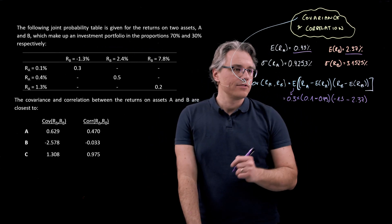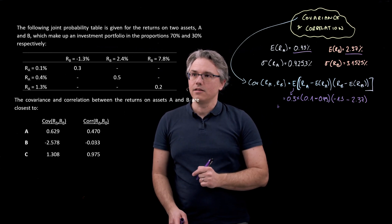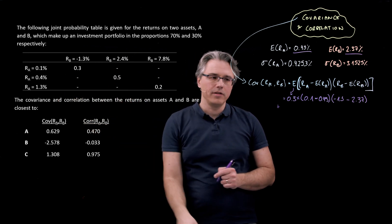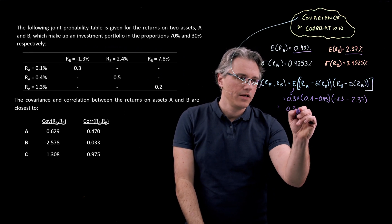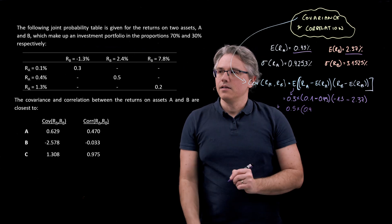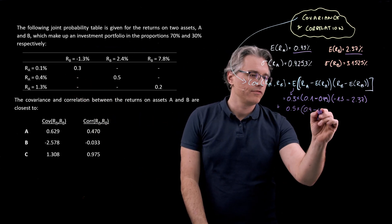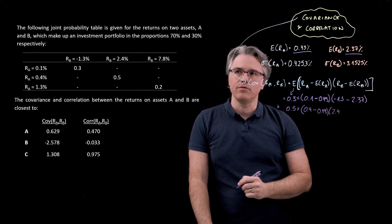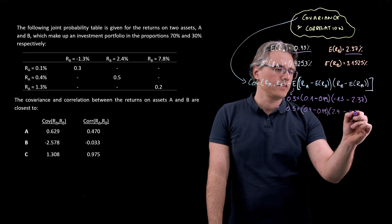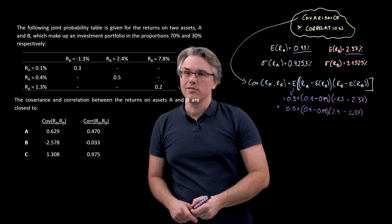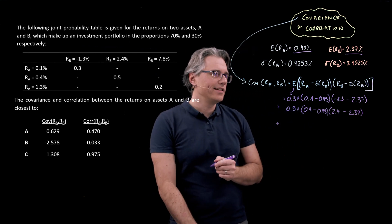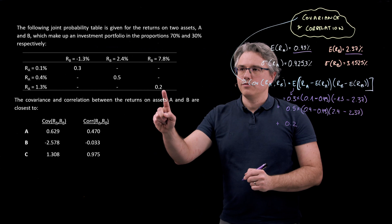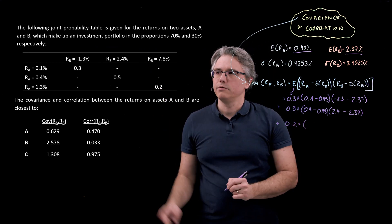To this, we're going to naturally add the second set of values. B taking on a value of 2.4, A taking on a value of 0.4, and this happening with a joint probability of 0.5. So 0.5 times, let's start with A, 0.4 minus 0.49, its expected return, multiplied by the value simultaneously taken on by B, that's 2.4, and minus 2.37. In this question, we've only got three possible combinations of the two, which is not very realistic, but from the point of view of the CFA exam, how much more can you be asked to solve?